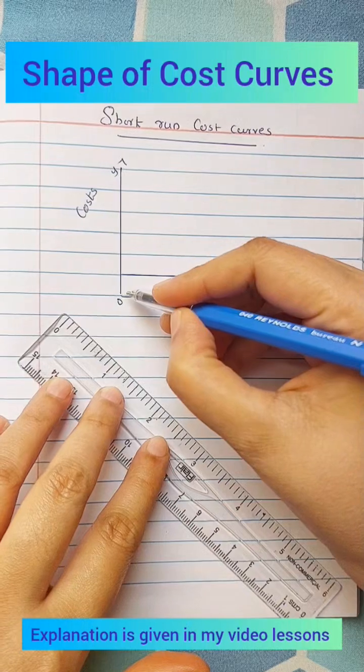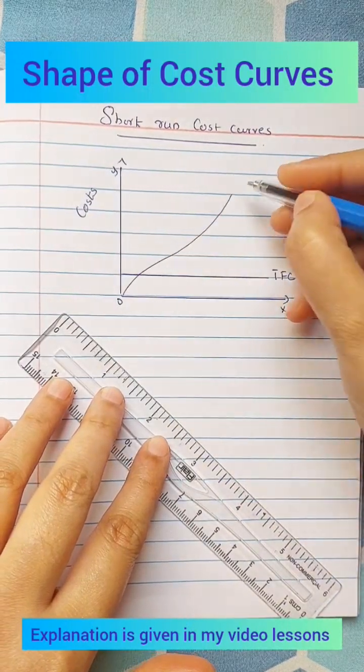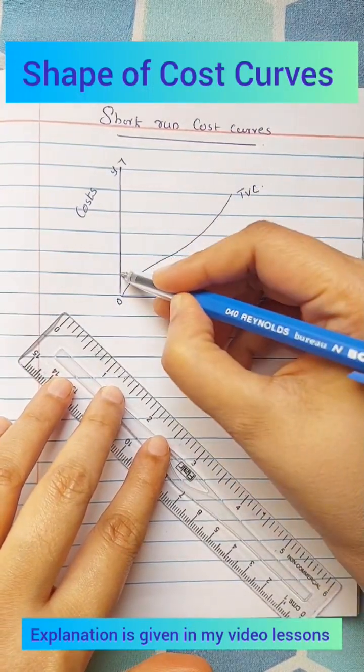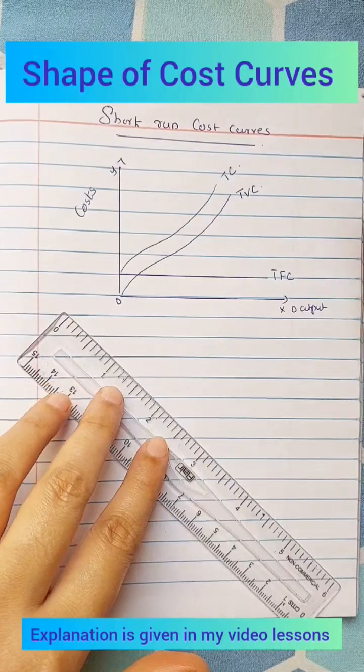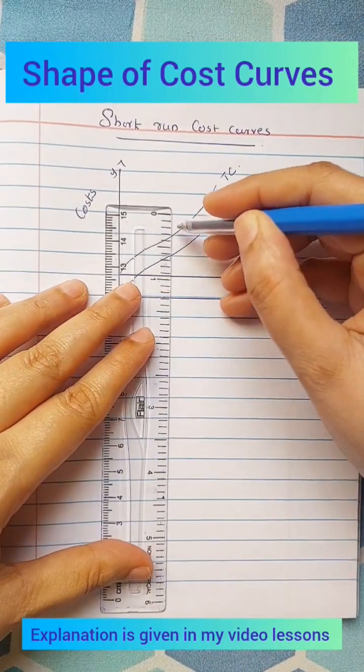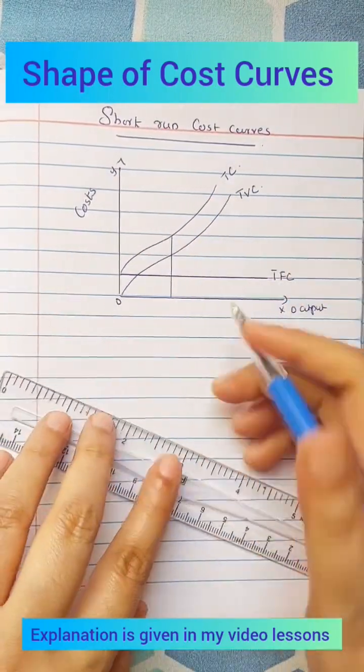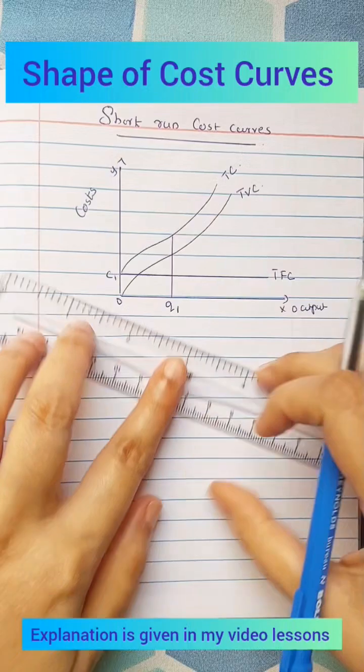Total fixed cost is a horizontal straight line because in short run it does not change. Total variable cost and total cost increase as output increases.